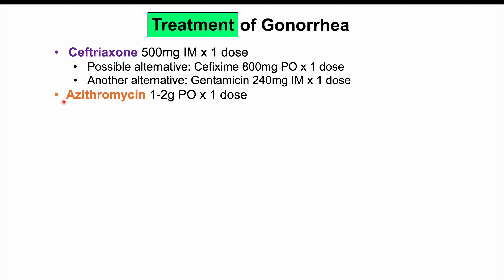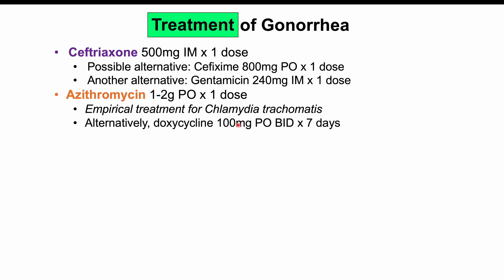Because gonorrhea and chlamydia co-occur so frequently, azithromycin is added as empirical treatment for Chlamydia trachomatis — typically 1 gram PO as a single dose, though 2 grams may be used with increased risk of nausea and vomiting. Alternatively, doxycycline 100 mg PO BID for 7 days can be used. Gonorrhea has developed resistance to penicillins and older macrolides like erythromycin, so azithromycin alone should not be used to treat gonorrhea.